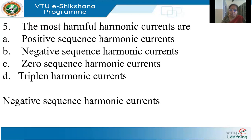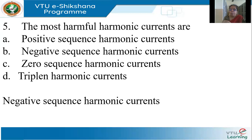The flux produced by the negative sequence will have double the slip compared to the flux produced by the positive sequence current. The positive sequence current rotates in one direction; the negative sequence current flows at the same speed in the opposite direction, so the slip between the two will be two. Therefore, negative sequence currents cause a lot of heating, and protective negative sequence relays are placed with rotating machines like motors and generators. When the threshold is exceeded, these relays trip the equipment.